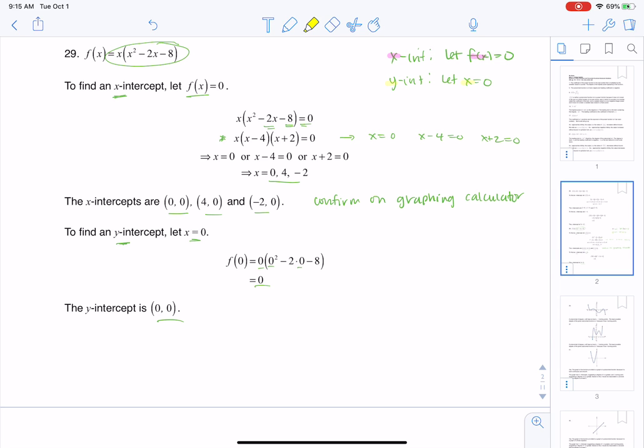And just as a side note, anytime you have (0, 0) as an x-intercept, that's automatically going to be your y-intercept because the origin is the only ordered pair that's both an x and a y-intercept.